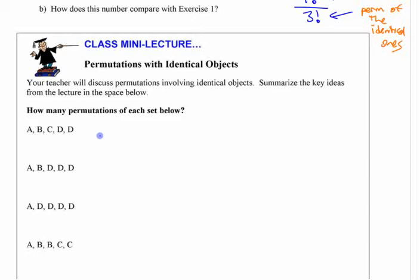Did you do the first couple here anyways? The first couple here, you have five objects, but you have two identical. Five objects, two identical.